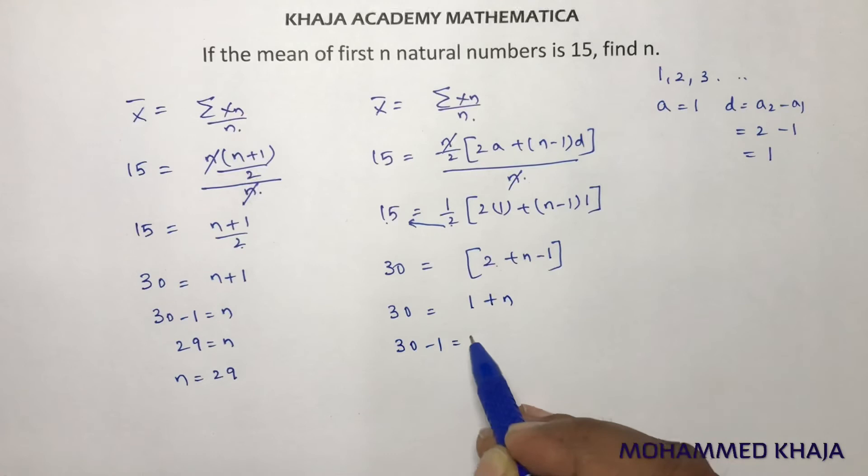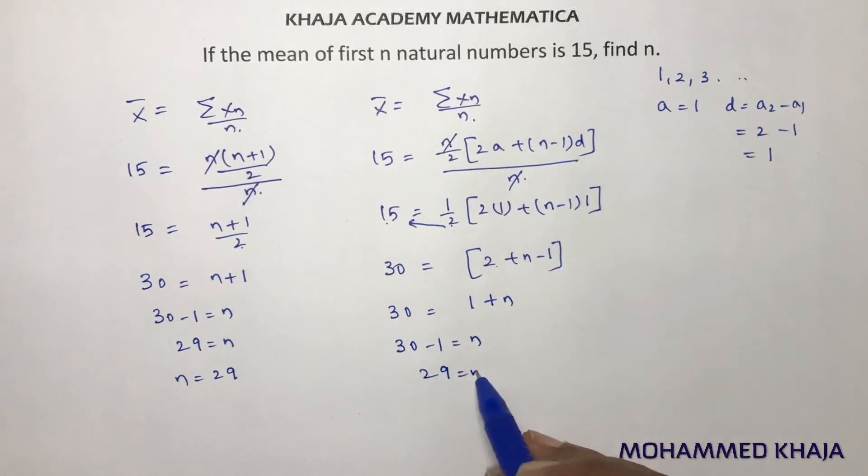So 30 minus 1 equals n. 29 equals n. Therefore, the value of n is 29.